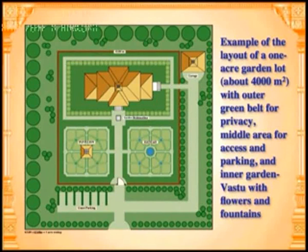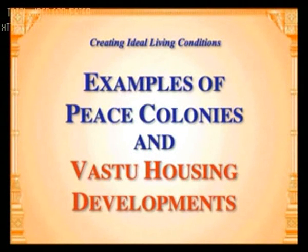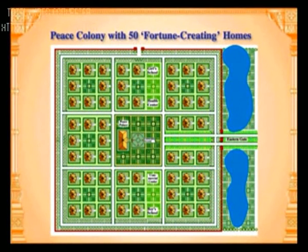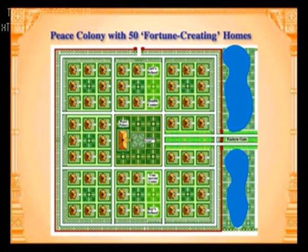This is a schematic layout of a peace colony with 50 fortune-creating marble homes, each located on a lot of about 10,000 square feet or 1,000 square meters. All roads are aligned east-west and north-south, and the main gate is in the east.